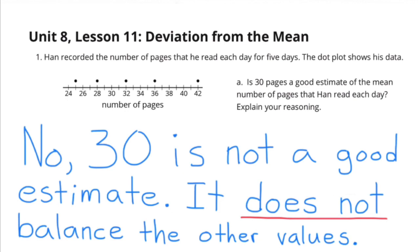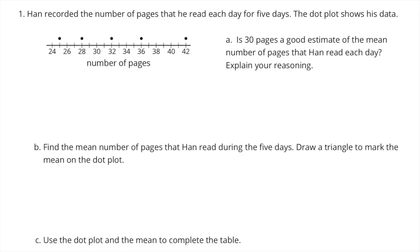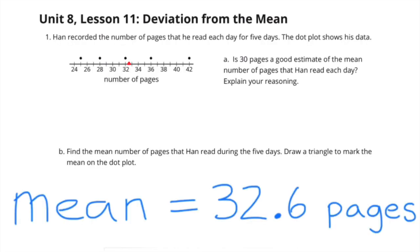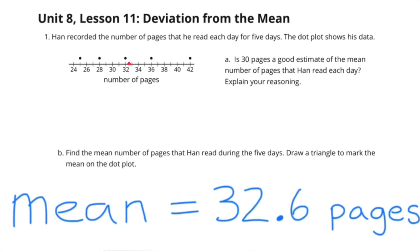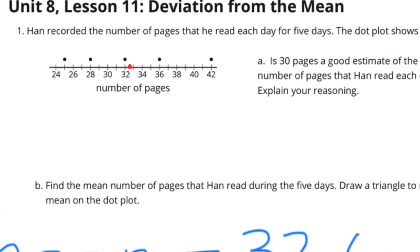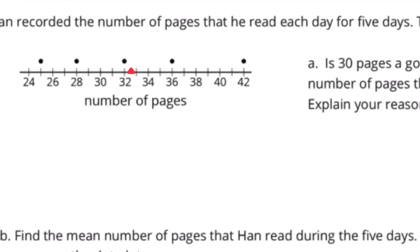Part b: Find the mean number of pages that Han read during the five days, and draw a triangle to mark the mean on the dot plot. After adding up all the number of pages he read each day and dividing by five, I got 32.6. So the mean is 32.6 pages, and here's the triangle placed on the dot plot representing the mean.